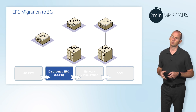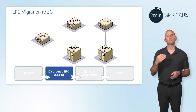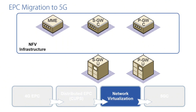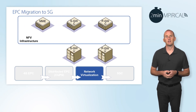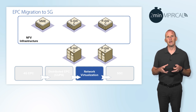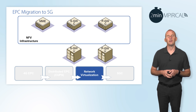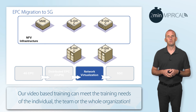This gives the service provider greater deployment flexibility in terms of where their control versus user plane network functions are deployed. This can go hand in hand with network virtualisation, so the service provider can deploy a virtualised infrastructure and have those control elements running as virtualised network functions on that infrastructure.